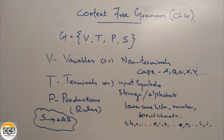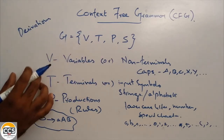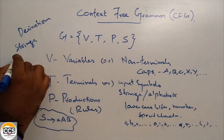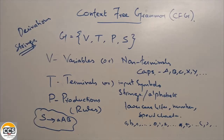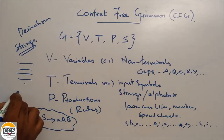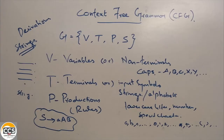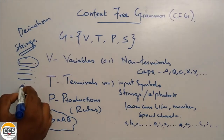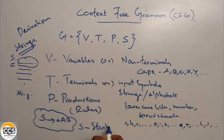We do derivations. When we use grammars, we derive strings. Using grammars, we will be deriving strings — that is the process of derivations. In this derivation, we use several productions step by step, and finally we produce the string. The first production used is the starting production S. So S stands for the starting production.